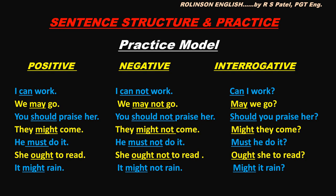For negatives, just put 'not' after these modals and you will get the negatives — modals are helping words: I cannot work, we may not go, you should not praise her, they might not come, he must not do it, she ought not to read, it might not rain. In case of interrogatives, take these modals before the subject, write them at the beginning and put a question mark at the end: can I work, may we go, should you praise her, might they come, must he do it, ought she to read, might it rain.